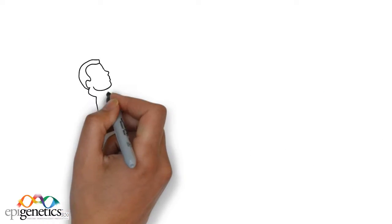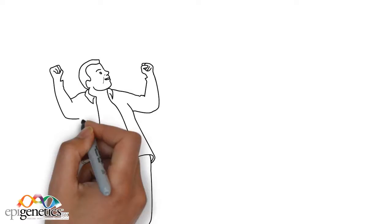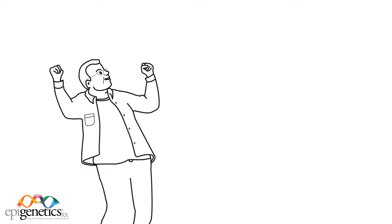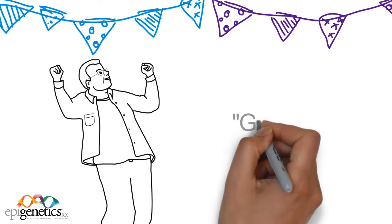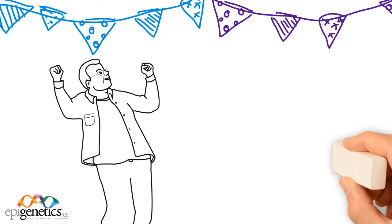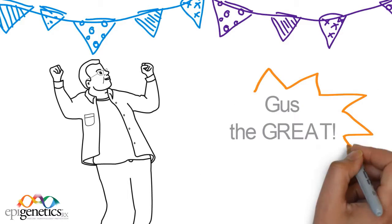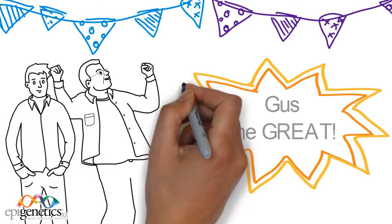After taking molybdenum and manganese combined with dietary modification including an alkalinizing diet, Gus was no longer gutty Gus. He was now Gus the Great, and his heartburn and indigestion was finally under control.